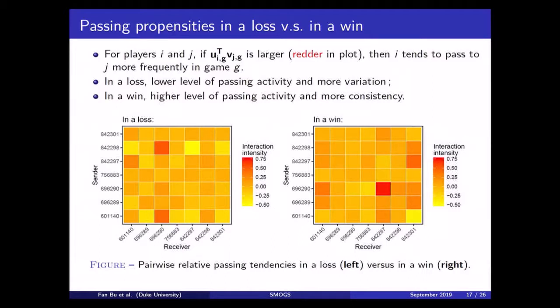We see that overall on the left panel in the lost game, the colorings are less red. And that means there is a lower level of passing activity between all the players in that particular game. And we see a higher level of variation across all the colorings of the tiles. And that means players passing behaviors are slightly more extreme and more variable in the last game.